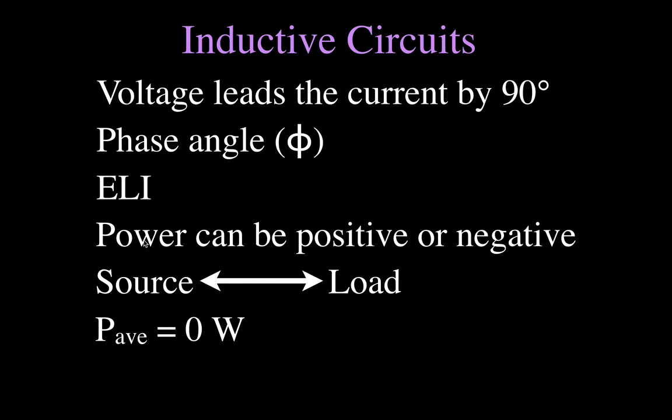In an inductive circuit, the power can be both positive and negative. When the power is positive, power is flowing from the source to the load. When the power is negative, it doesn't mean it's less than zero — it just means the power is flowing from the load back to the source. When we add up all the positives and negatives, the average power in the inductive circuit is zero. That circuit consumes no power and can do no real work.